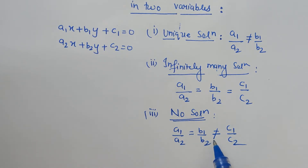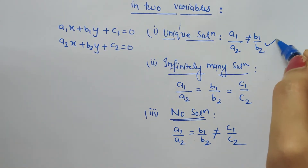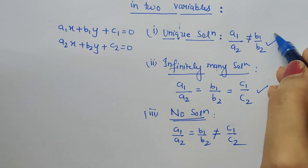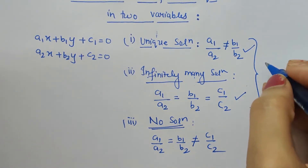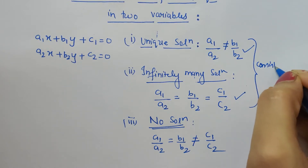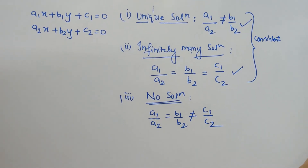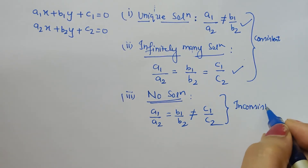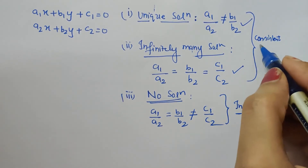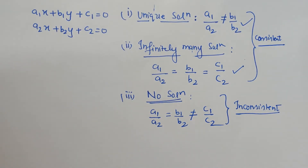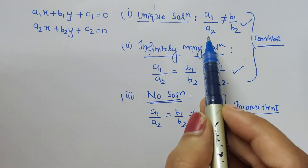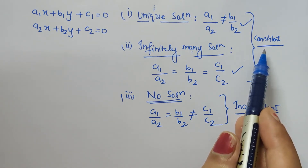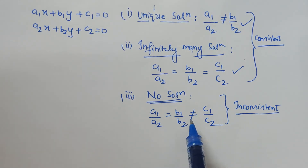Now, when the solution exists — be it unique solution or infinitely many solutions — the system of linear equations will be called consistent. And when there does not exist any solution, the system of linear equations will be called inconsistent. These are certain keywords whose meaning should be clear to all.